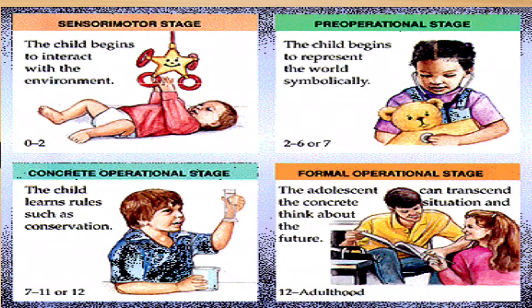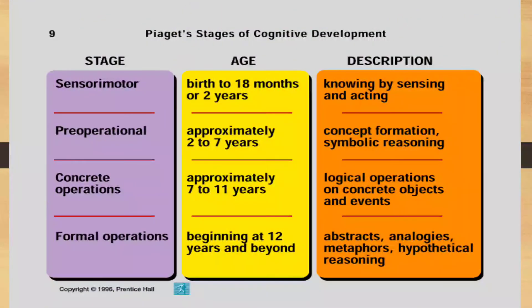There are four stages in which cognitive development occurs in children: the Sensorimotor stage from 0 to 2 years, the Pre-operational stage from 2 to 7 years, the Concrete Operational stage from 7 to 12 years, and the Formal Operational period from 12 years and above. You can see in this table what cognitive development is occurring at each stage.